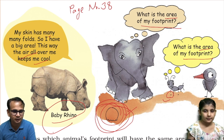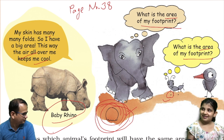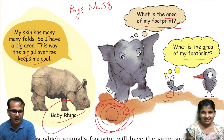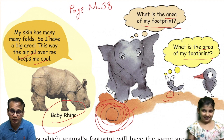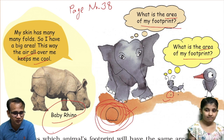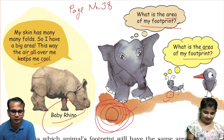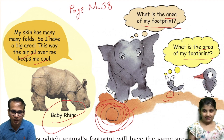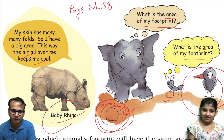The ant is comparing its footprint with the elephant's footprint. The ant is very small and the elephant is very big. Measuring the area of the ant's footprint is difficult — it's like a dot. It will be very small to measure. And this body is looking at them but not telling anything.